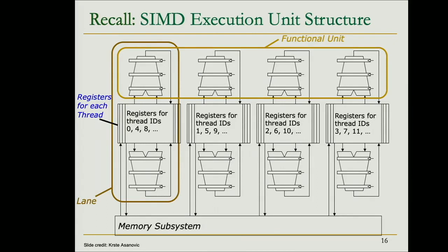Each SIMD lane is a functional unit, and the operands are provided by the register file. The register file inside each GPU core has a certain total size — the number of registers available. When mapping threads onto GPU cores, we partition the register file and assign each thread as many registers as it needs, as long as enough registers are available.